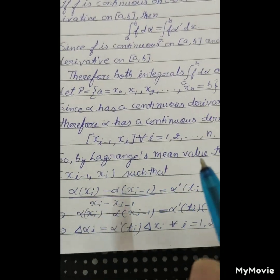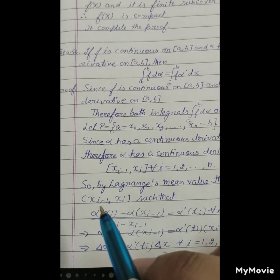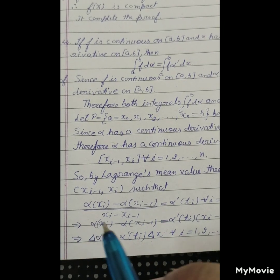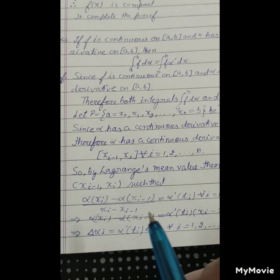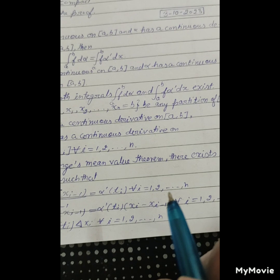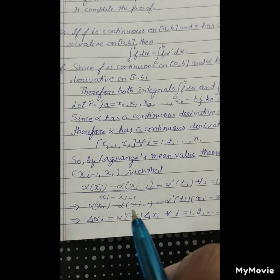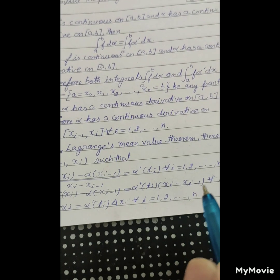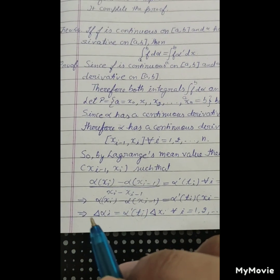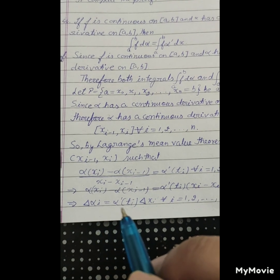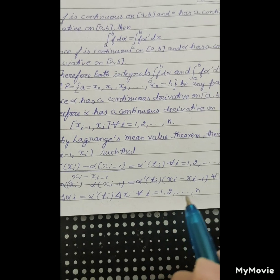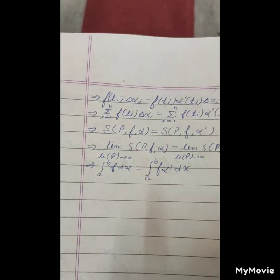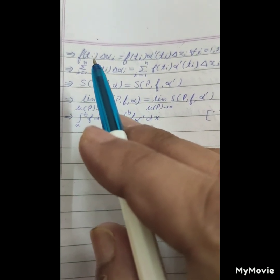By Lagrange's Mean Value Theorem, there exists t_i in (x_{i-1}, x_i) such that [alpha(x_i) - alpha(x_{i-1})] / [x_i - x_{i-1}] equals alpha dash of t_i, for all i from 1 to n. This implies alpha(x_i) - alpha(x_{i-1}) equals alpha dash(t_i) times (x_i - x_{i-1}), i.e., delta alpha_i equals alpha dash(t_i) times delta x_i, for all i from 1 to n.